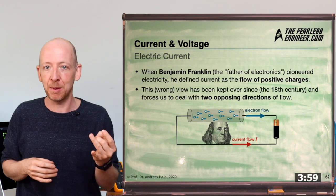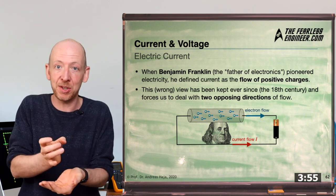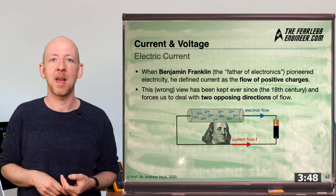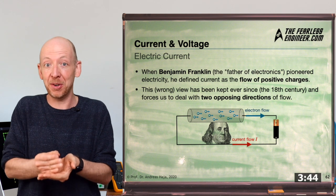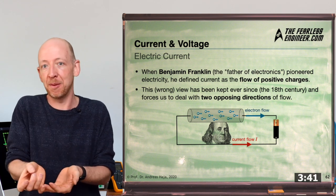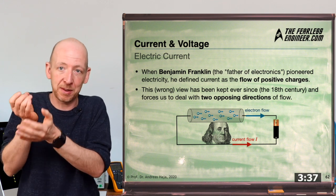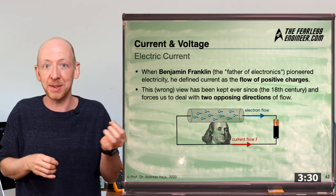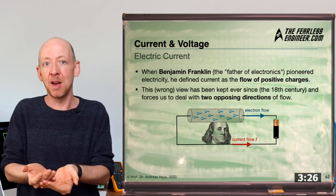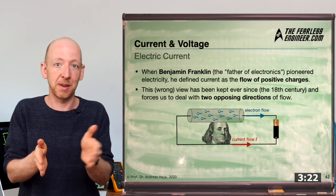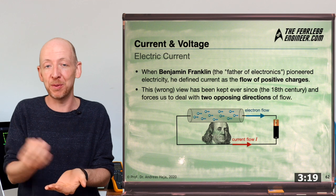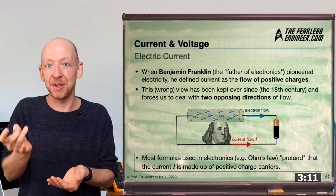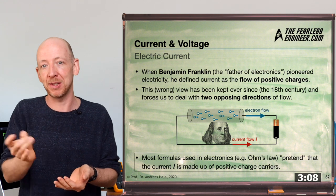When electrons were discovered in the late 19th century and people realized that the actual things moving were electrons — negative charges — it was already too late to change the established literature. In a simple circuit, the electron flow occurs from the negative towards the positive terminal of the battery, as we expect. But the conventional current flow, as described by Franklin, points in the opposite direction, from positive to negative terminal. This is why most formulas in electronics pretend that current is made up of positive charges. Thanks a lot, Mr. Franklin.